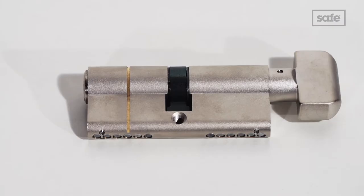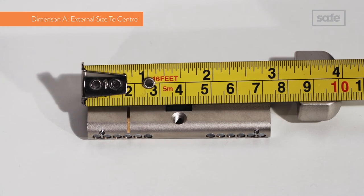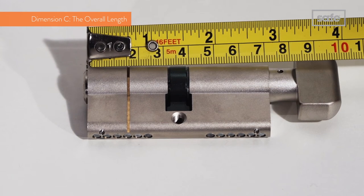The thumb turn should be on the inside of the door. The measurements here are A35, B35 and C70.